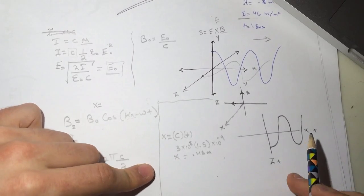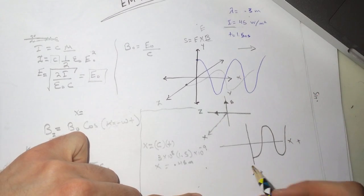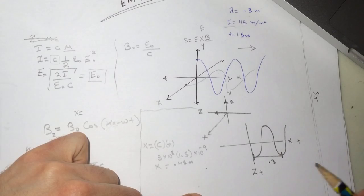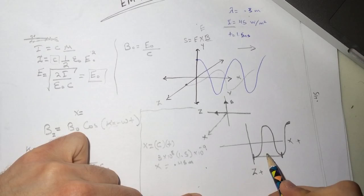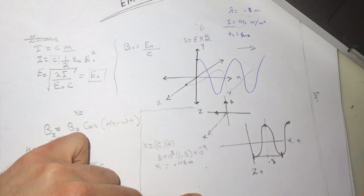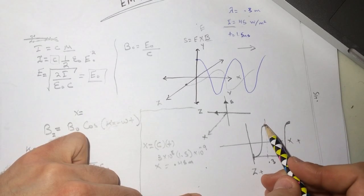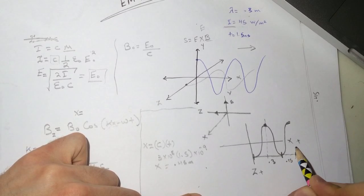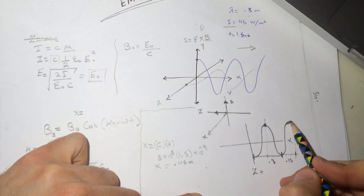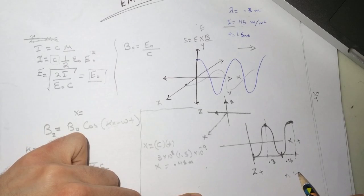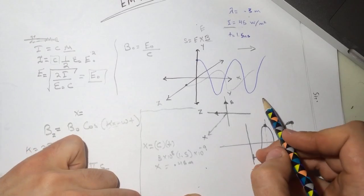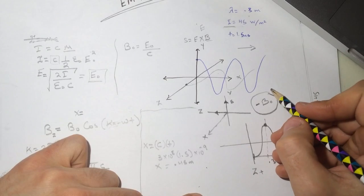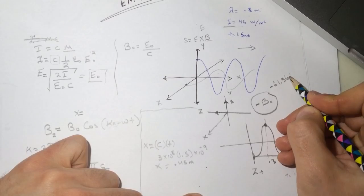The wavelength λ = 0.3 m. At x = 0.45 m, that is 1.5 wavelengths from the origin. Looking at the wave: after one full wavelength (0.3 m) the wave returns to maximum, and after an additional half wavelength (0.15 m more, reaching 0.45 m total) you land at the negative maximum. So at t = 1.5 nanoseconds the magnetic field is at its negative maximum: B = −B₀ ≈ −61.36×10⁻⁸ T.